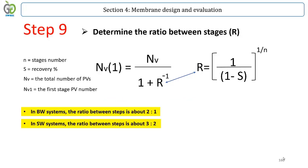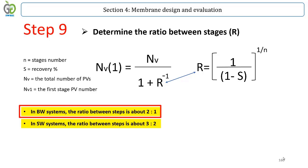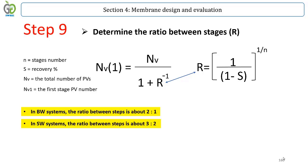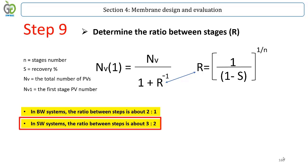A 3-stage system with 4, 3, and 2 vessels in the first, second, and third stage respectively has a staging ratio of 4:3:2. In brackish water systems, a staging ratio between two subsequent stages is usually close to 2:1 for 6-element vessels and less than that for shorter vessels. In two-stage seawater systems with 6-element vessels, the typical staging ratio is 3:2.